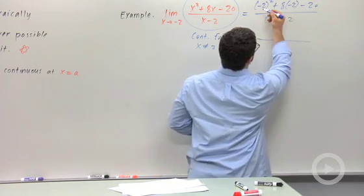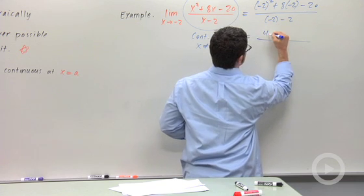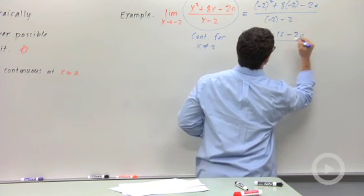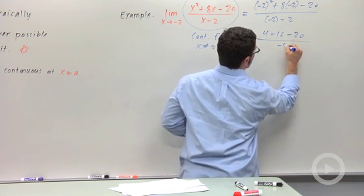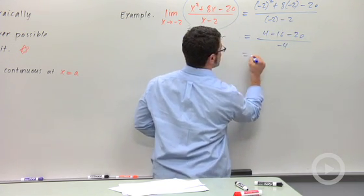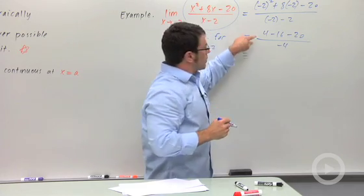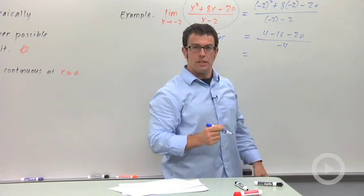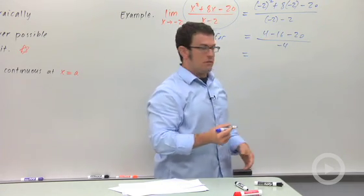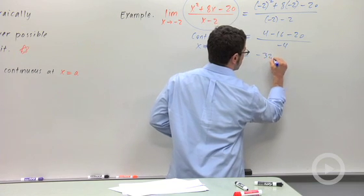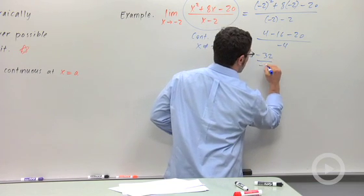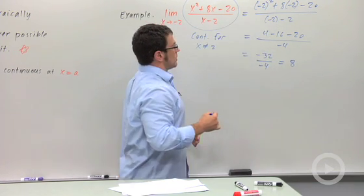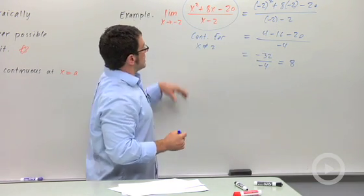I have 4 minus 16 minus 20 on top, and negative 2 minus 2 equals negative 4 on the bottom. On top: 4 minus 36 equals negative 32, over negative 4. This is 8. So the value of the limit is 8.